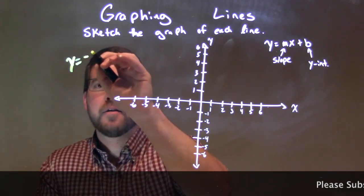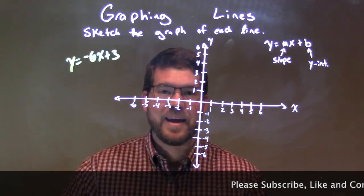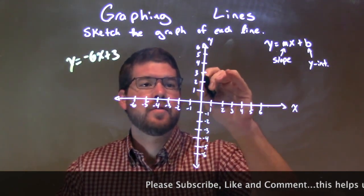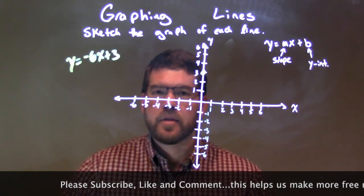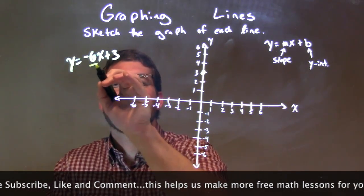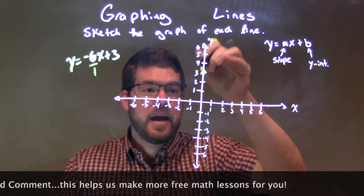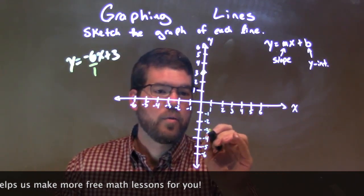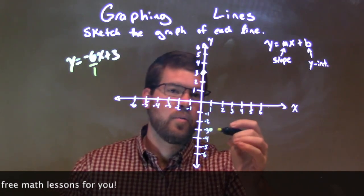y equals negative 6x plus 3. The first thing we're looking at, again, is our y-intercept — our b-value right here. Y-intercept is 3. So on the y-axis, I'm going to put a dot right there at 3. Now the next thing they tell us is our slope: negative 6. That negative 6 is the same thing as negative 6 over a positive 1. So we go down 6 units first: 1, 2, 3, 4, 5, 6 — over 1 unit right there.